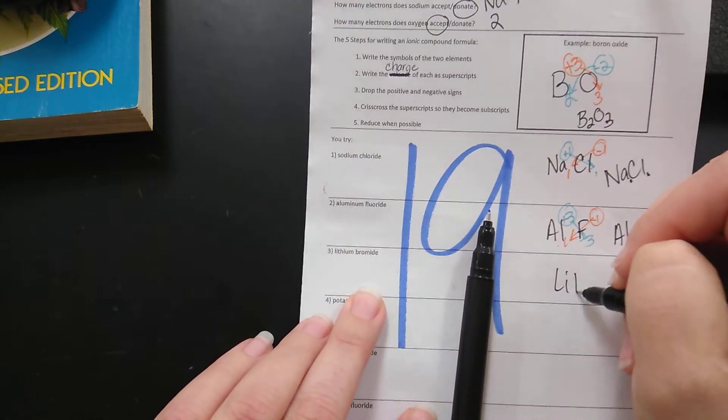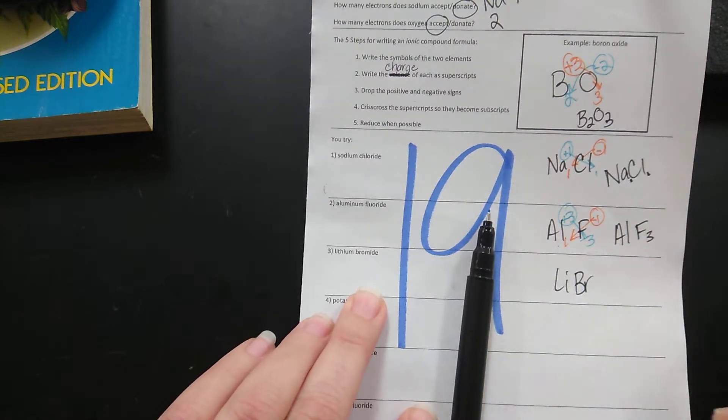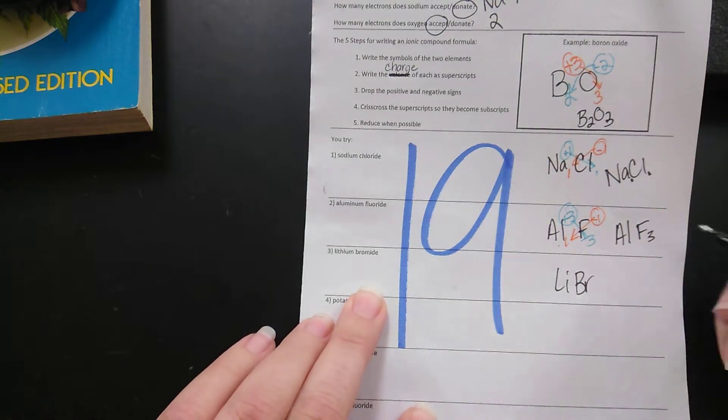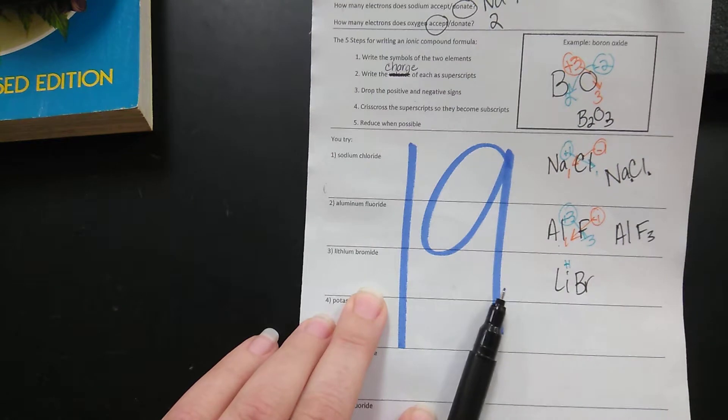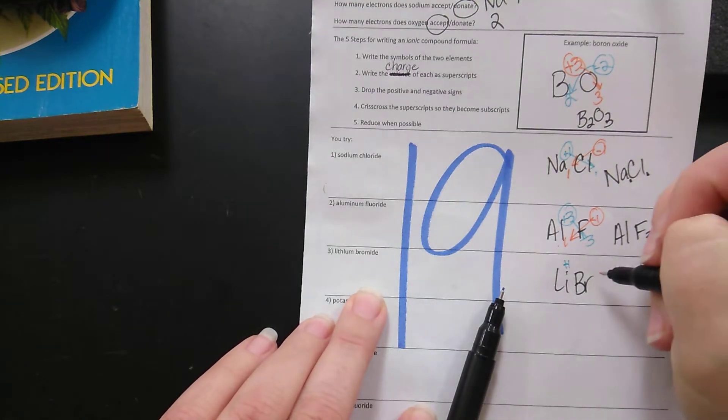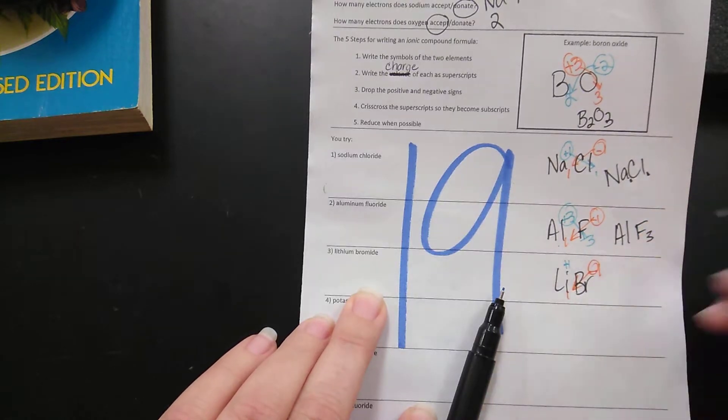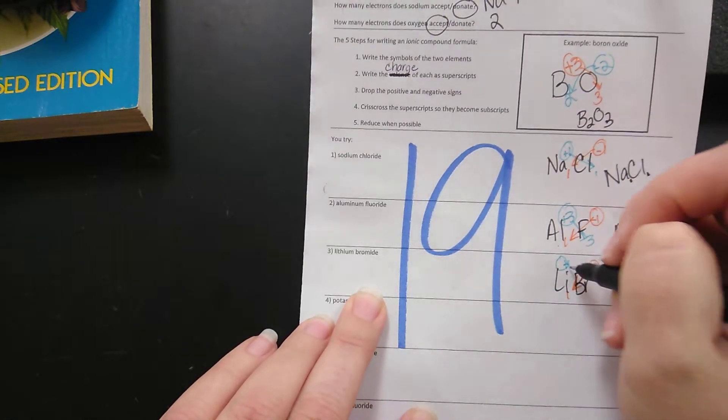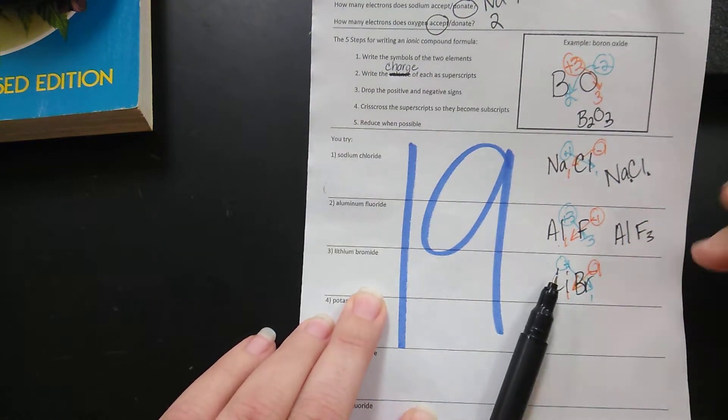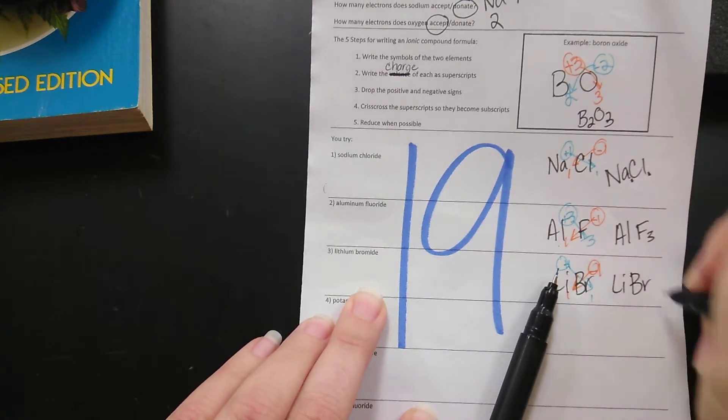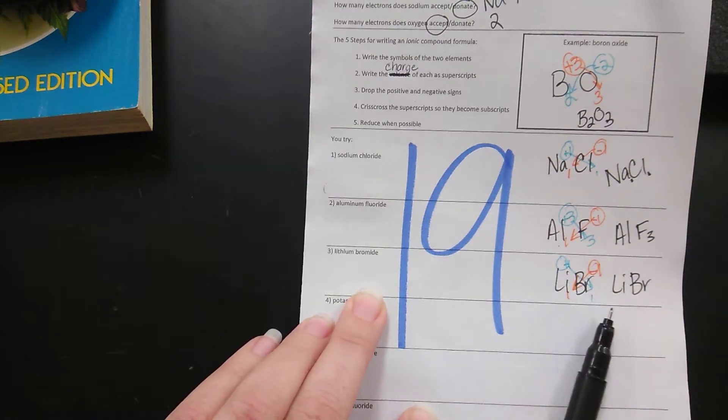Next we have lithium bromide, lithium and bromine, lithium is in group one so it has a positive one charge. Bromine is in group seven so it has a negative one charge. We're now going to crisscross our exponents. When lithium and bromine react they do so in a one to one ratio.